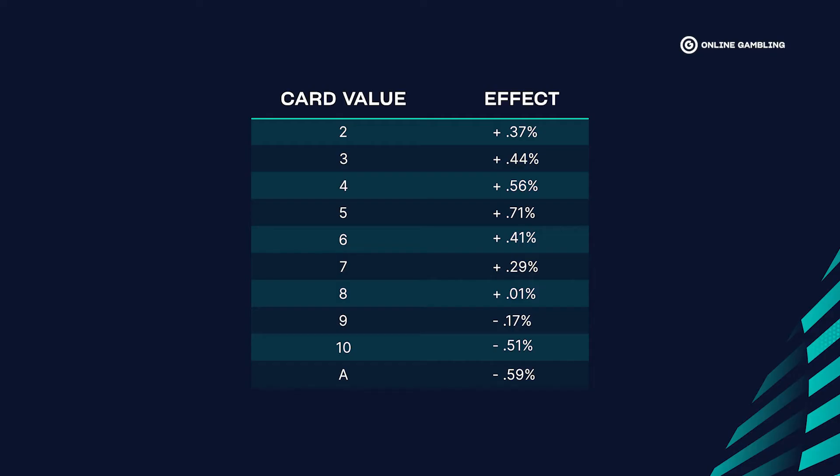In card counting, we assign each card a basic value that directly correlates to their actual value when removed from the deck. Here's a graph on the value of these cards and their effect when removed from the deck. Obviously, trying to calculate these percentages while playing blackjack would be very hard, which is why we use plus and minus one.